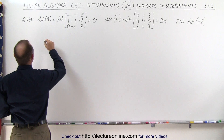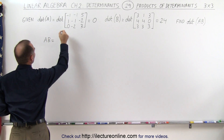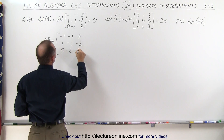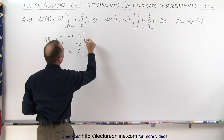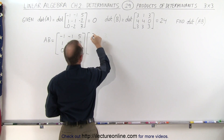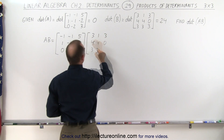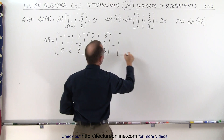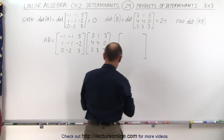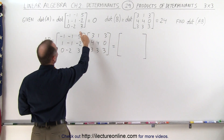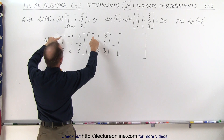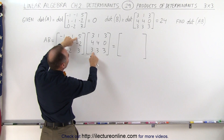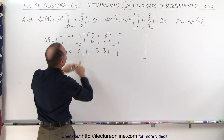So when we take A times B, that is equal to the first matrix — negative 1, negative 1, 0, negative 2, and 3 — multiplied times the second matrix — 3, 1, 3, 3, 3. When we do that we get a 3x3 matrix. To find the first element we multiply this row times the first column: that's minus 3, minus 4 is minus 7, plus 15, giving us plus 8.